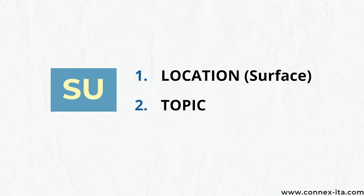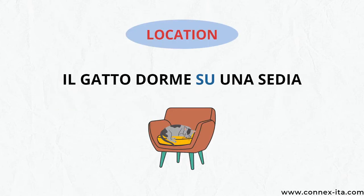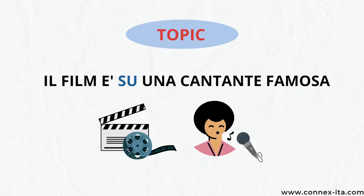The next preposition, 'su', is an easy one. You can use it to tell about the position of something or someone when they are on a surface, or you can use it for referring to a specific topic. For instance, 'Il gatto dorme su una sedia' — the cat is sleeping on a chair. 'Il film è su una cantante famosa' — the film is about a famous singer.